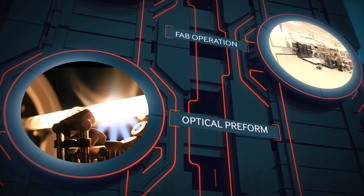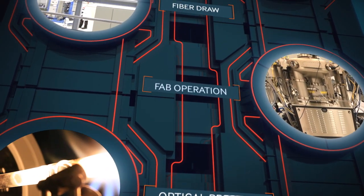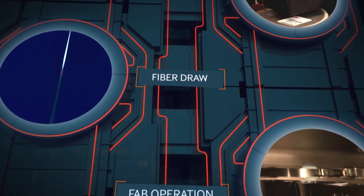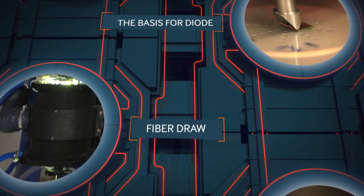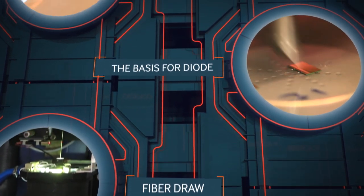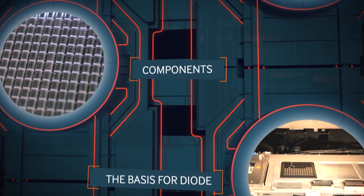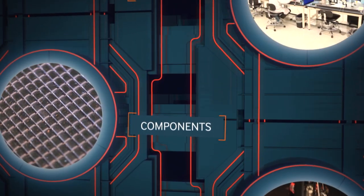IPG is a completely vertically integrated company. All steps, starting from the development of diode structures and the production of quartz glass activated with rare earth ions, to the final assembly of instruments, are based on the company's expertise. This ensures superior quality and vast advantages over competitors.